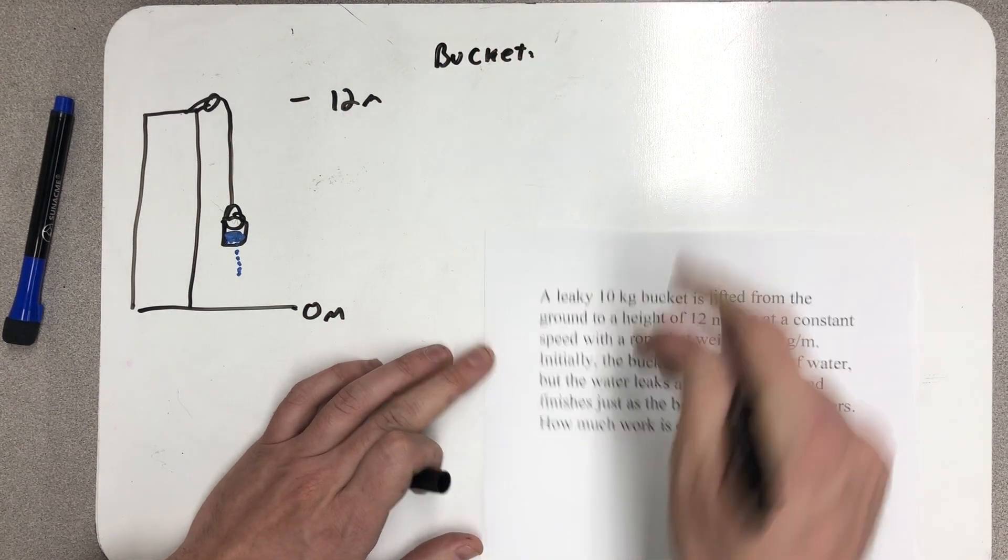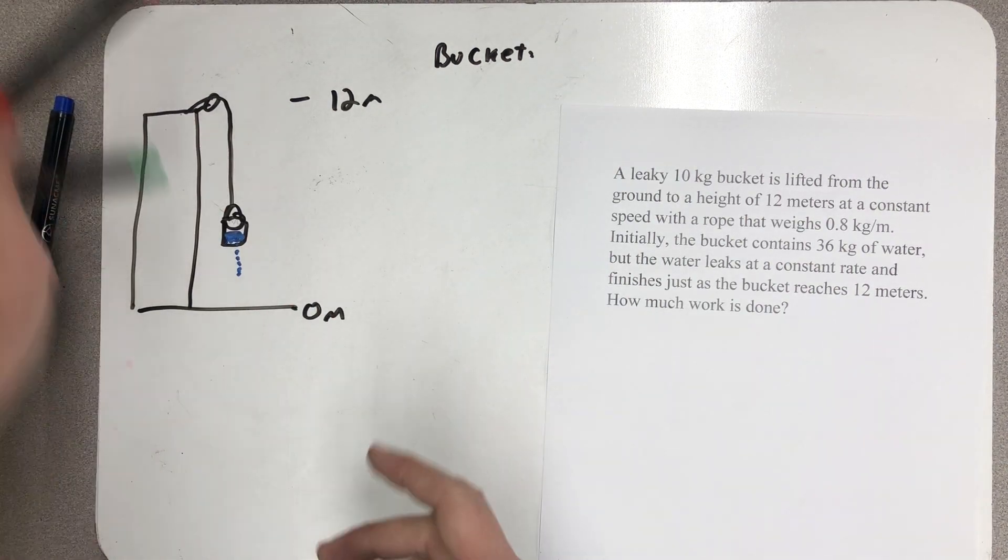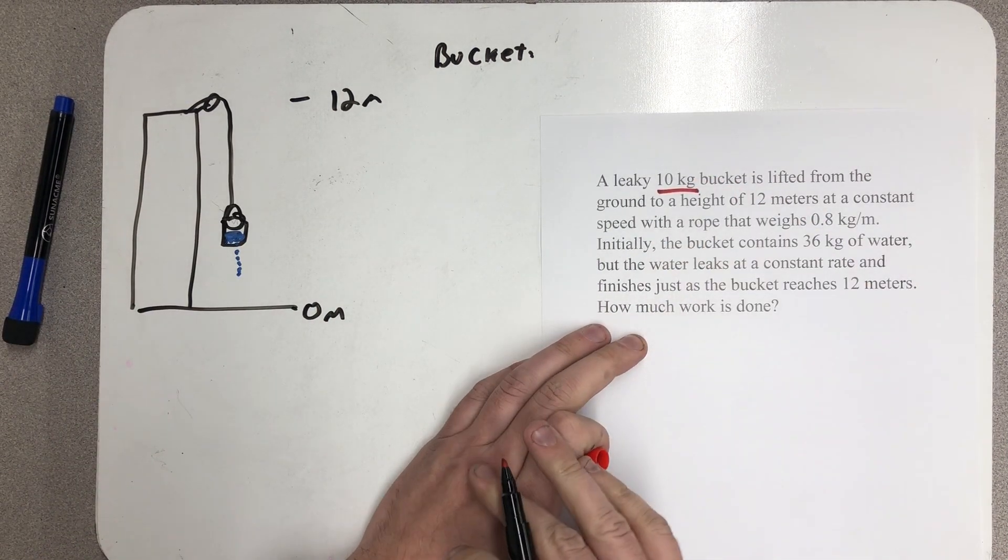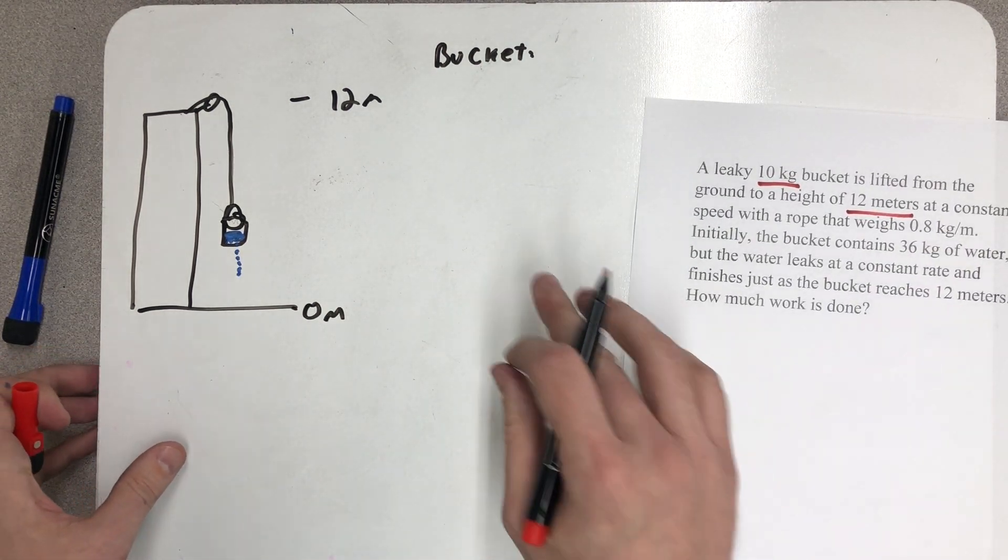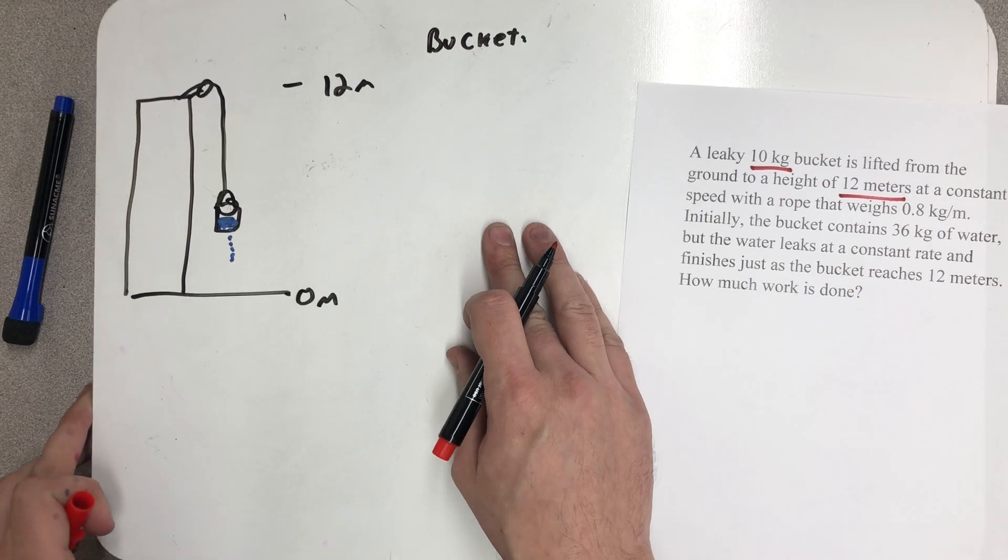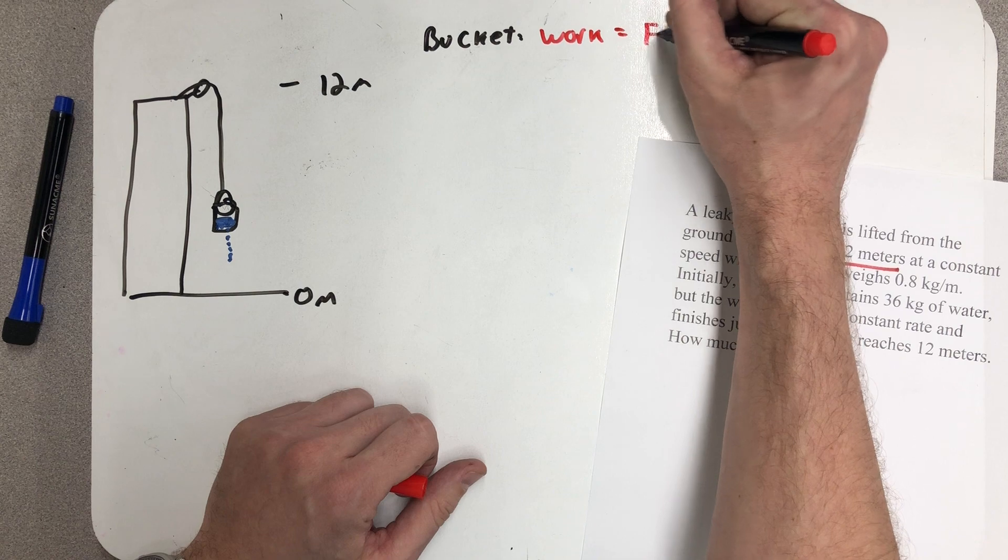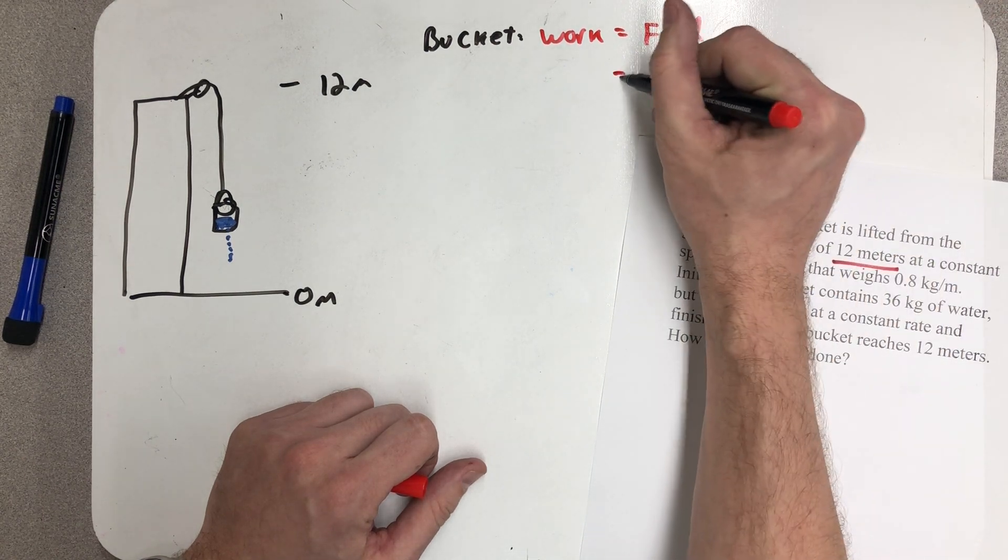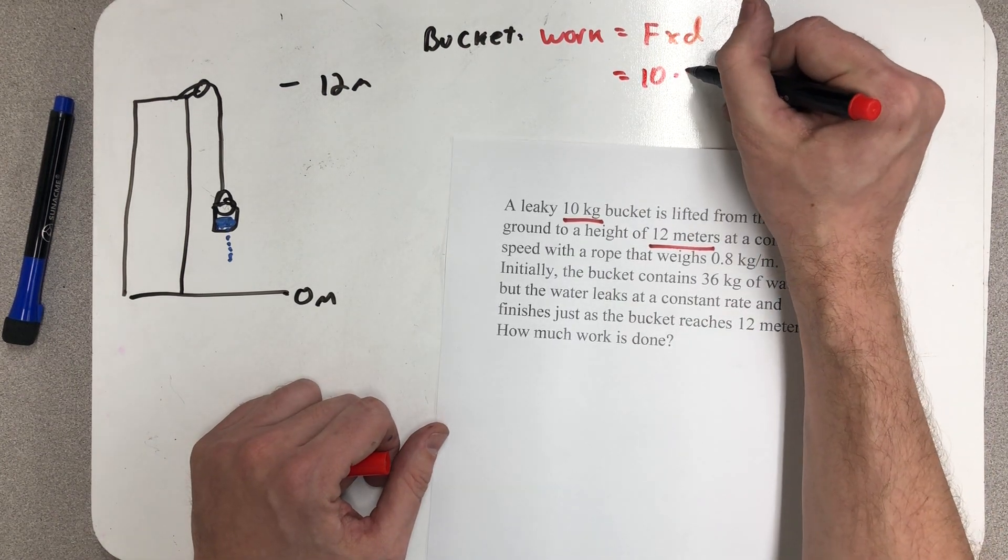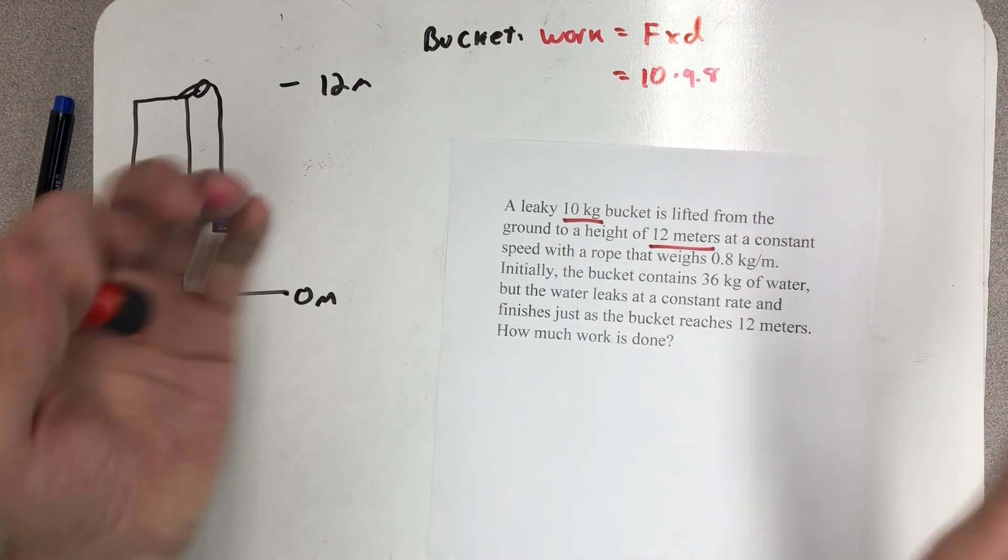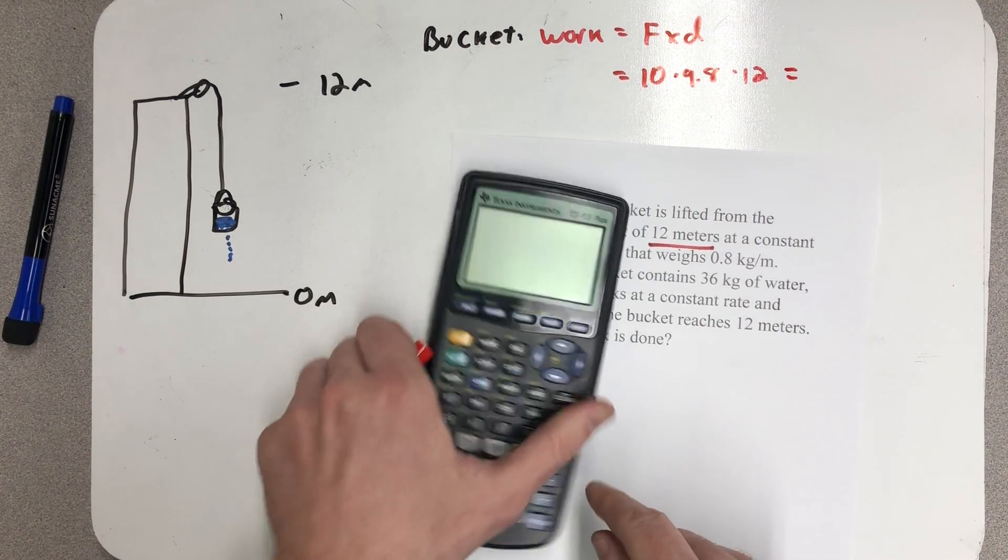We'll start with the bucket. That's the easiest thing to understand because the bucket itself doesn't change in any way. It's always a 10 kilogram bucket being lifted that height of 12 meters. So here we have the simplest case where work is just force times distance. Well I have the mass of the bucket, 10 kilograms, times the acceleration due to gravity to make it a force, times the 12 meters.